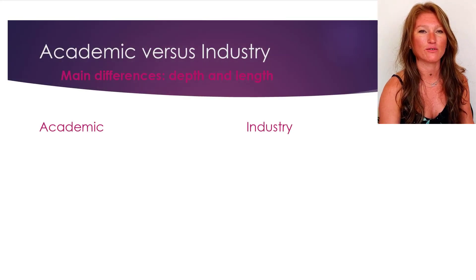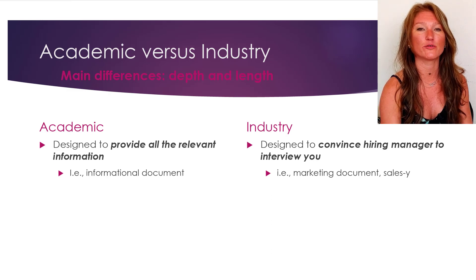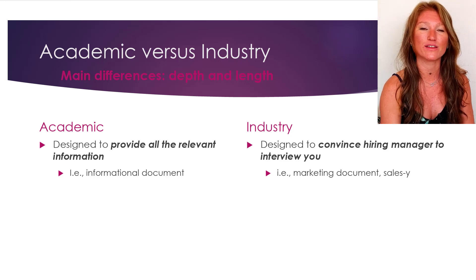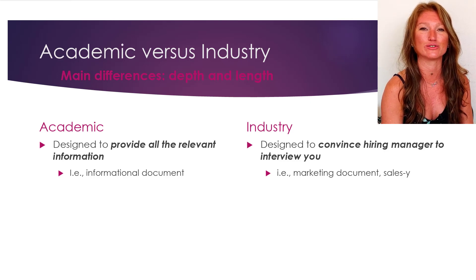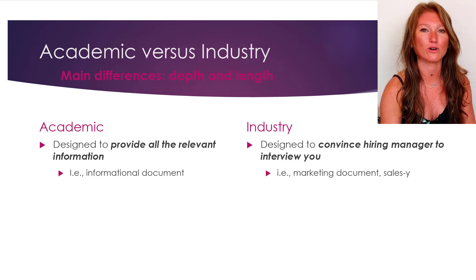In academic CVs, the first thing to know is that an academic CV is an informational document. It is designed to take all of the information about you that is important and relevant for your research experience and put that in one document that somebody can skim and find that information. An industry CV, on the other hand, is going to be more of a marketing document. The main point with the industry CV is to get you in the door, to get you an interview — a bit more of a showy marketing document than the academic CV.